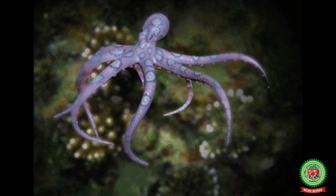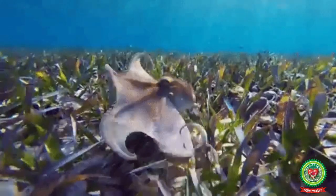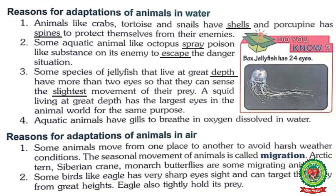The aquatic animal octopus releases poison from its body, which kills other living organisms. In this way, octopus protects itself.